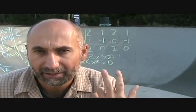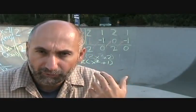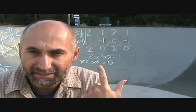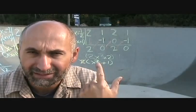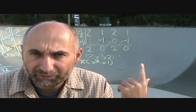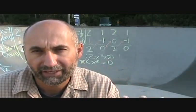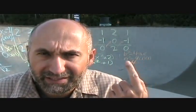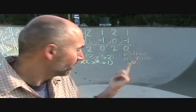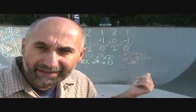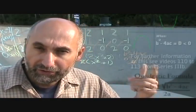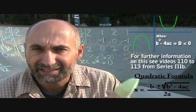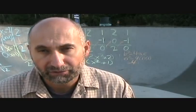The discriminant is b² - 4ac. Written in standard quadratic form, a = 1, b = 0 (the x term is missing), and c = 1. So the discriminant is 0² - 4(1)(1) = -4. Since -4 is less than zero, we'd have a negative under the square root in the quadratic formula.